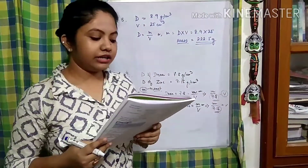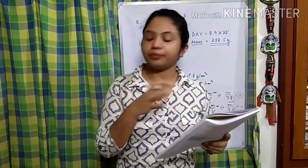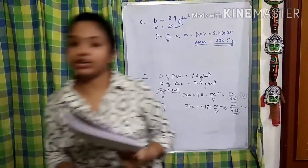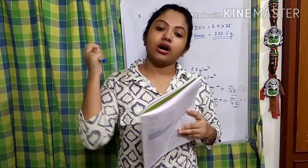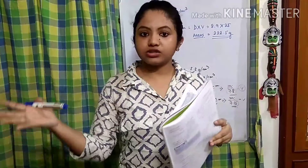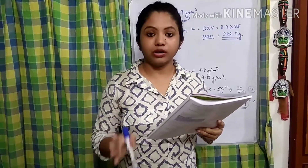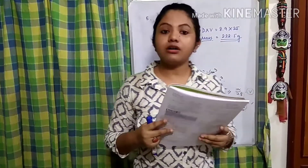Now there is a true and false section. Number one: equal mass of different substances have the same volume. Remember the activity we did in our earlier class — equal mass of salt and iron have different volumes. So this is a false statement: equal mass of different substances does not always have the same volume; they can have different volumes.